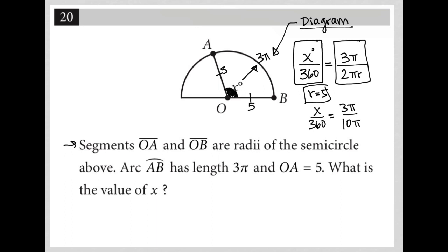Now, I can cancel out my π's because π divided by π is 1. So what I'm left with is this proportion here where I can cross multiply. And I'd end up with 10x is equal to 1,080, right? 360 times 3.